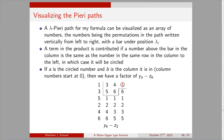A lambda-Pieri path from my formula can be visualized as an array of numbers — the permutations in the path written vertically from left to right with a bar in column i under position lambda_i. A term in the product is contributed if a number above the bar in the column is the same as the number in the same row in the column to the left, in which case it will be circled. If the circled number is a and b is the column (with column numbers starting at 0), then we have a factor of y_a minus z_b.